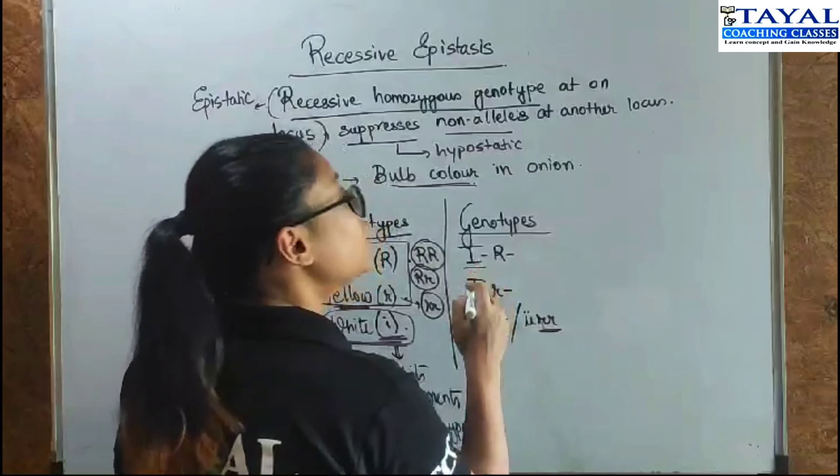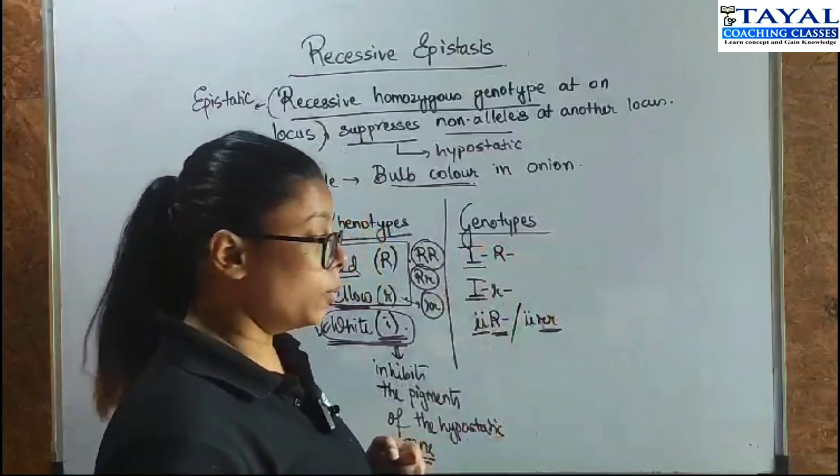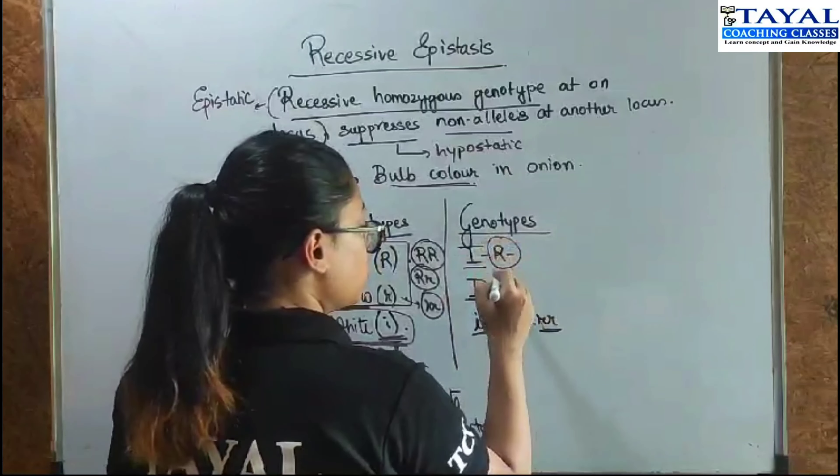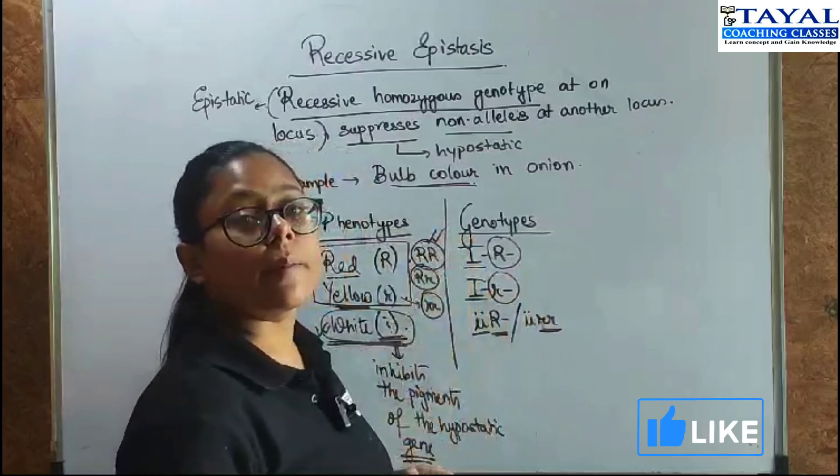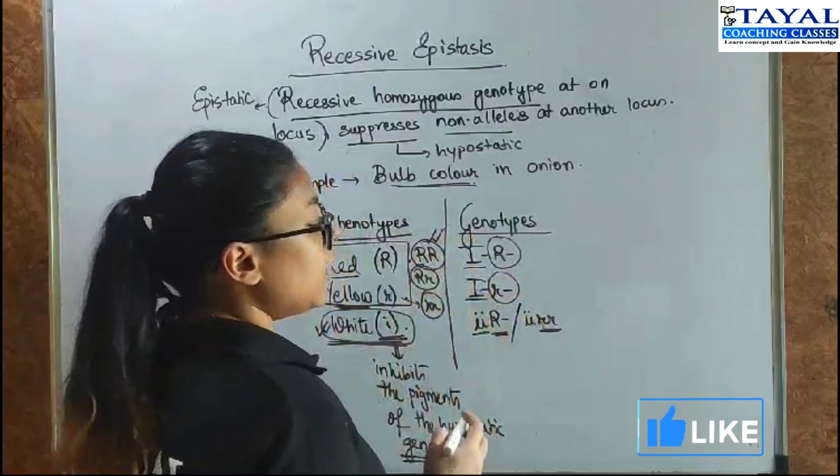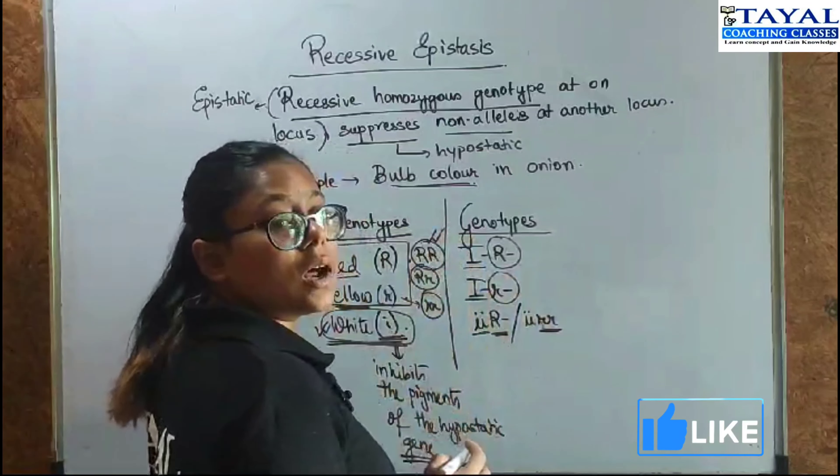If it is in a heterozygous or dominant condition, then the R gene will show its effect in the true sense where capital R capital R will give you a red bulb and small R small R will give you a yellow bulb.